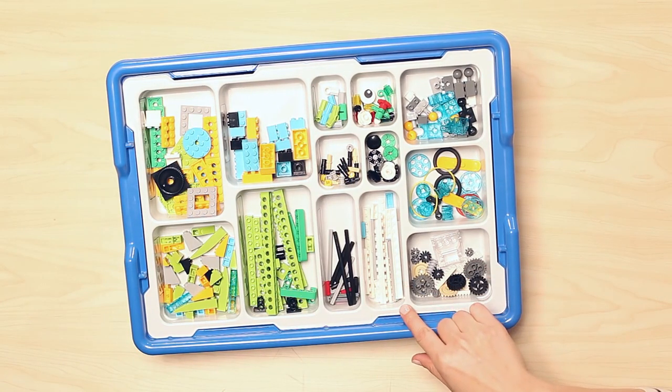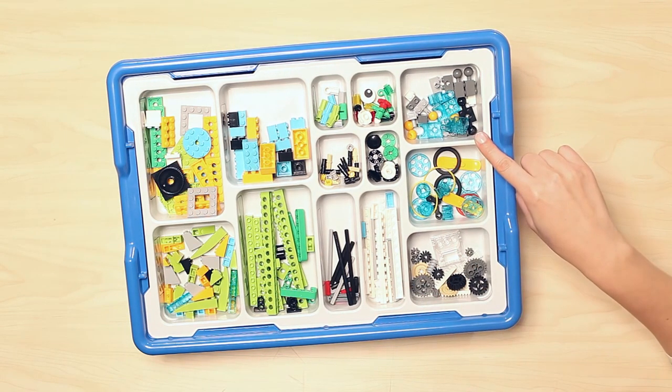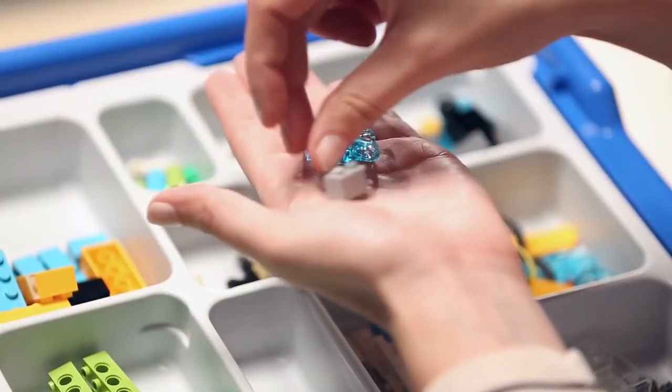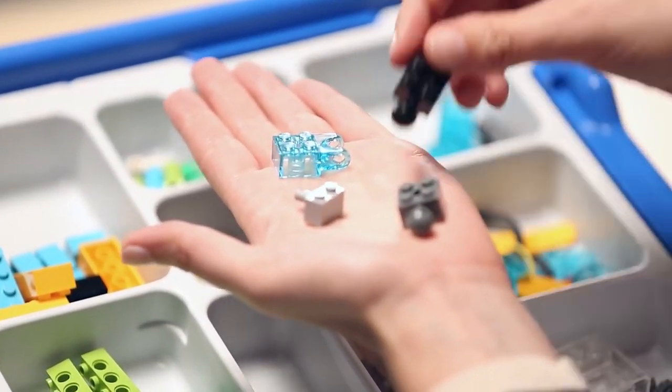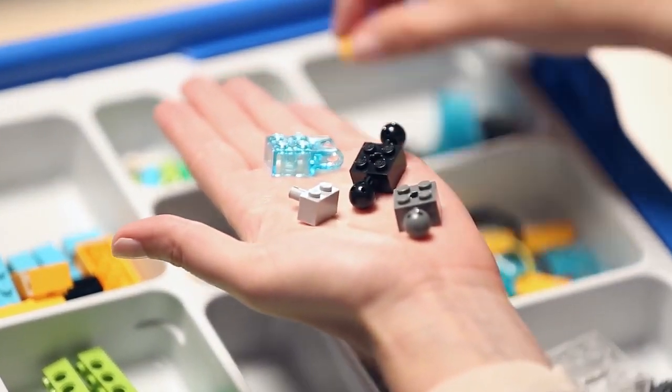The adjacent compartment houses all the plates that are only one stud wide. Going back up to the top, we have a place for our bricks with connection pegs, bricks with studs on the side, our studded beams with cross holes, and a series of bricks with ball joints and ball bearings.